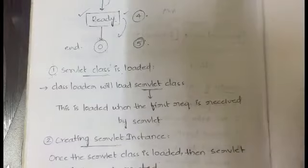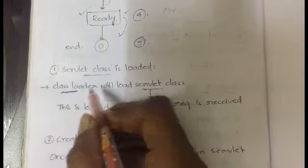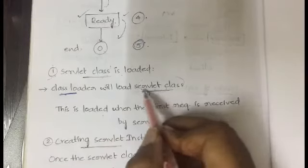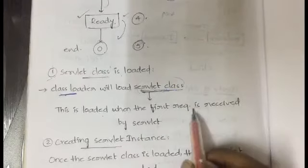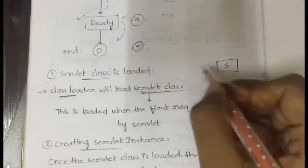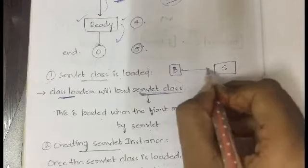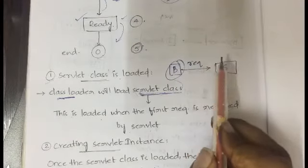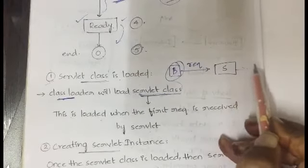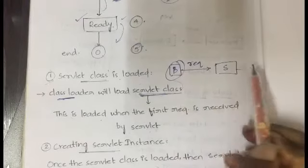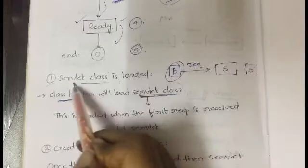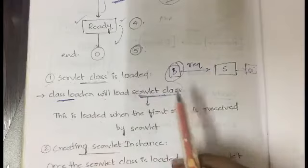The first step is loading the servlet class. A class loader is used to load the servlet class. When is this class loaded? When the first request is received by the servlet. The client sends a request through the web browser to the server, and the server forwards it to the servlet. Whenever the servlet gets its first request, the class loader loads the servlet class.